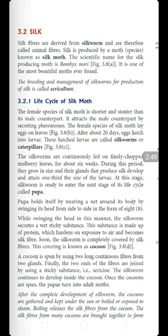After about 20 days, the egg hatches - that is, it breaks open - and larva comes out from the egg. Once the female silk worm lays the eggs, after 20 days the larva emerges. The larva is a small insect, and these hatched larvae are called silk worms or caterpillars.